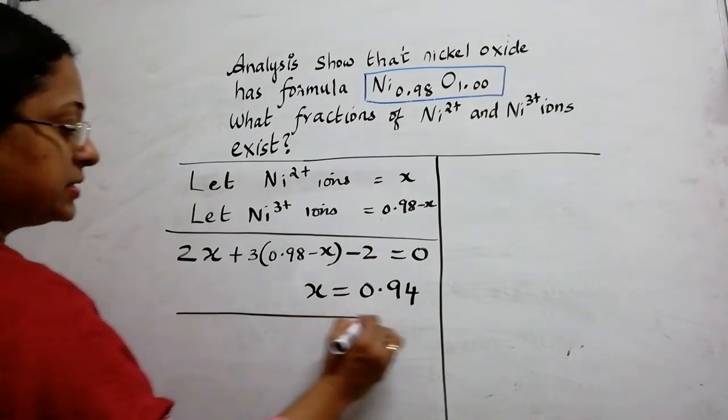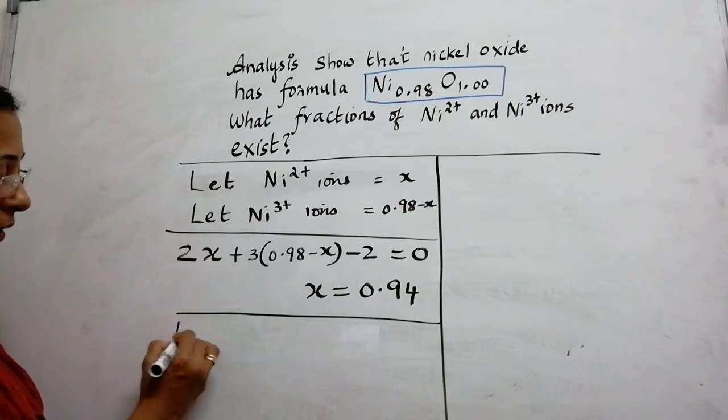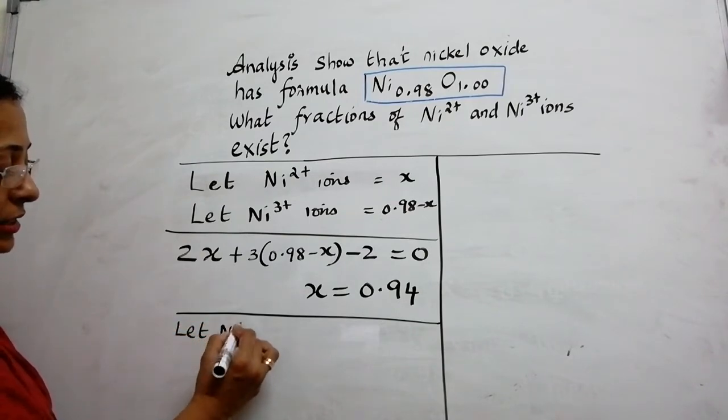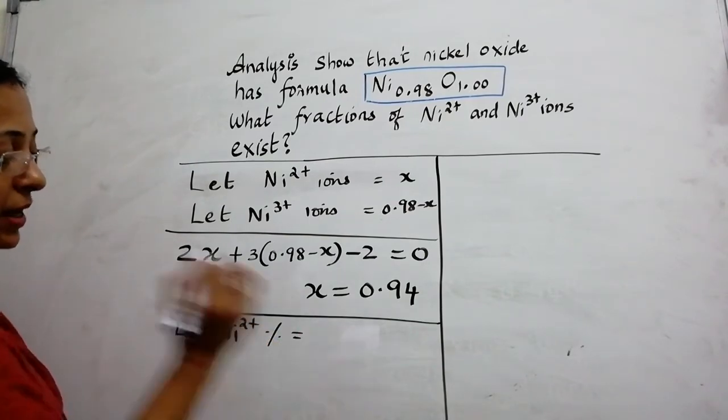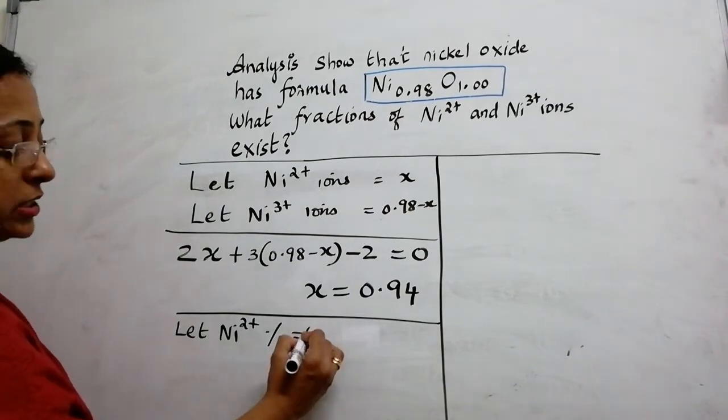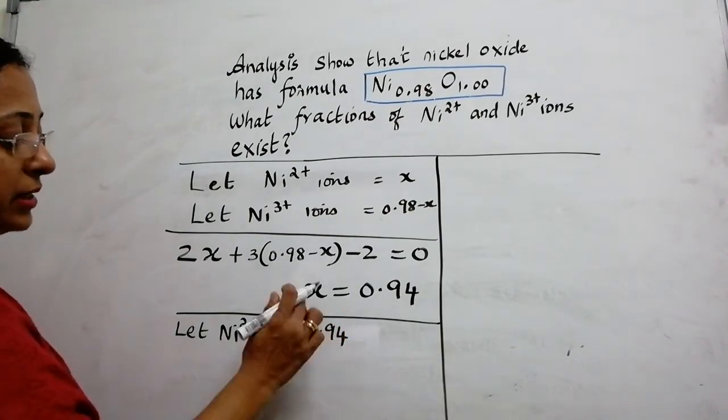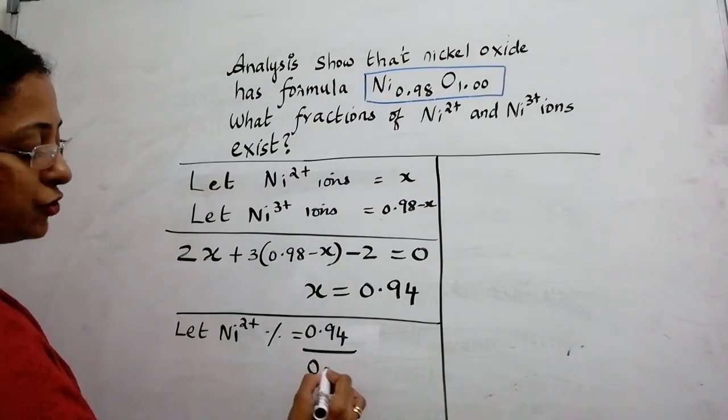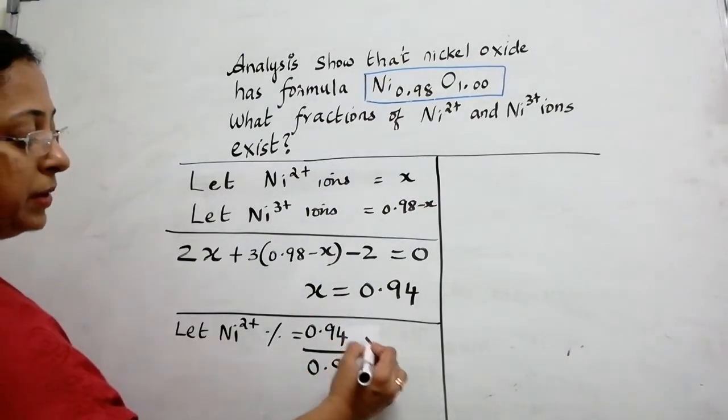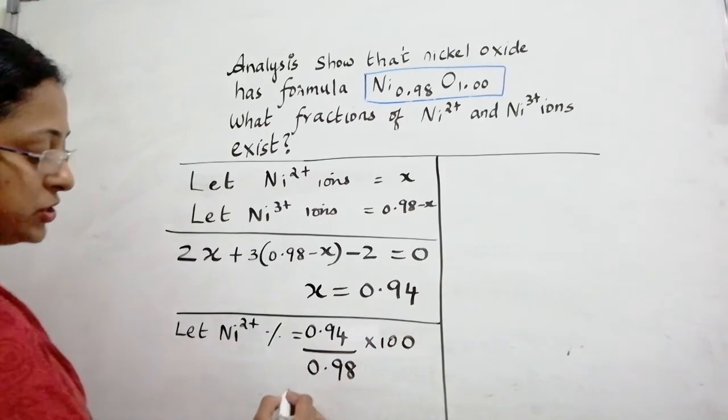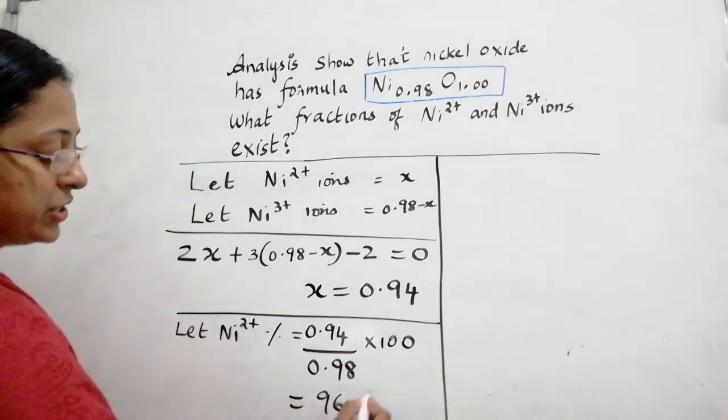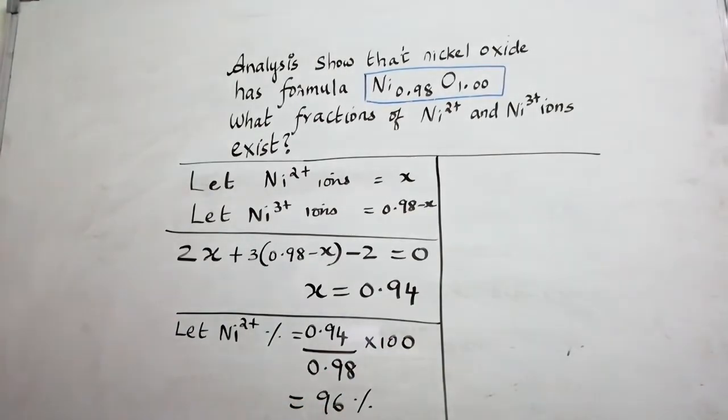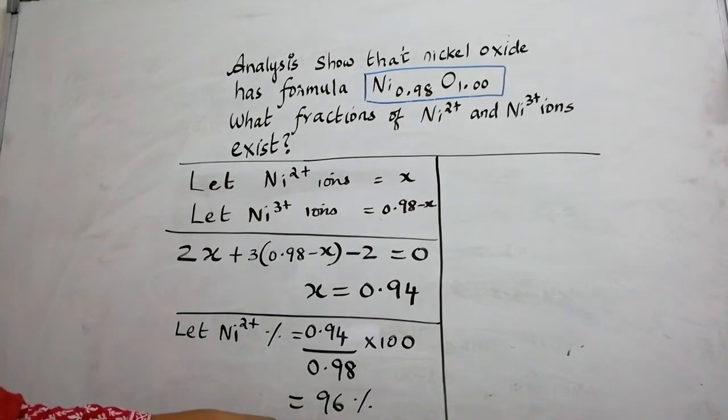The next step is let nickel 2+ percentage be calculated in this form: 0.94 which is nothing but the X, the amount of nickel 2+ by the total amount that is given in the problem into 100. And when you solve this, you will get 96%. So nickel 2+ percentage is found to be 96%.